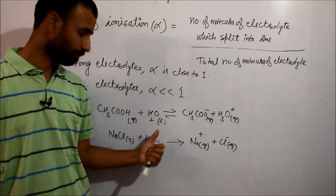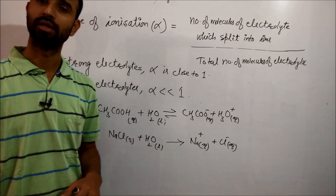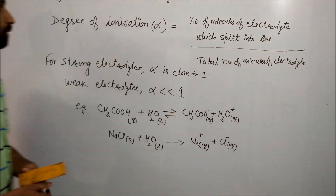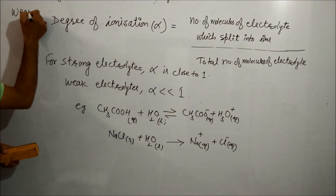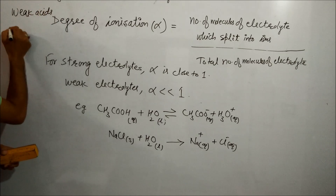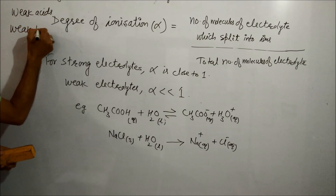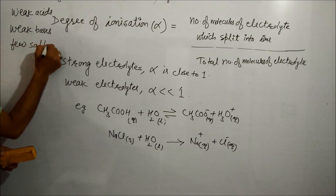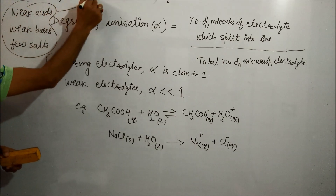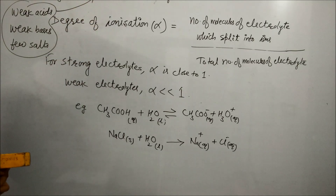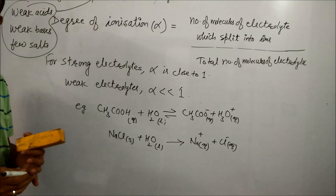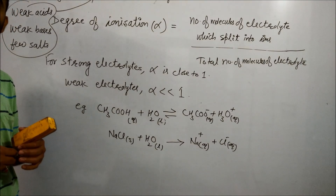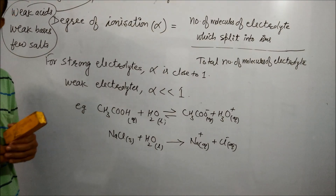If the solution is dilute, weak electrolytes are expressed in terms of equilibrium, while strong electrolytes are expressed by a single arrow. Weak acids, weak bases, and a few salts are weak electrolytes, whereas strong acids, strong bases, and most salts are strong electrolytes.